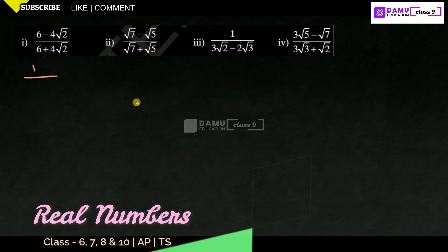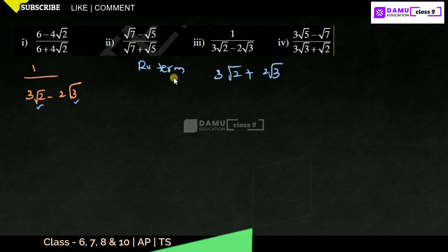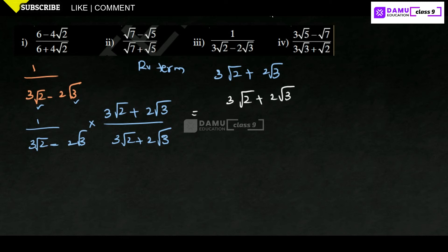Our third problem is 1 divided by (3 root 2 minus 2 root 3). The rationalizing term is found by keeping the same values but changing the symbol. So the rationalizing term is 3 root 2 plus 2 root 3. We multiply and divide by (3 root 2 plus 2 root 3).